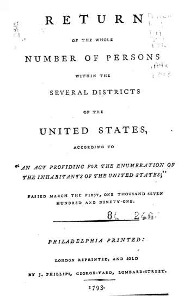Native Hawaiian and Other Pacific Islander: a person having origins in any of the original peoples of Hawaii, Guam, Samoa, or other Pacific Islands, including Native Hawaiian, Guamanian or Chamorro, Samoan, and Other Pacific Islander. Some Other Race: includes all other responses not included in the White, Black or African American, American Indian and Alaska Native, Asian, and Native Hawaiian and Other Pacific Islander race categories. Respondents providing write-in entries such as multiracial, mixed, interracial, or a Hispanic/Latino group are included here.